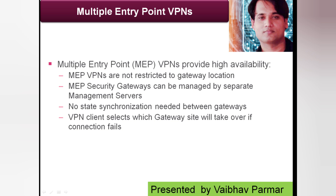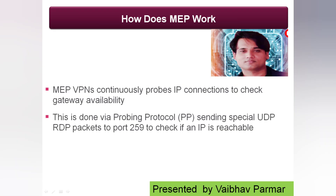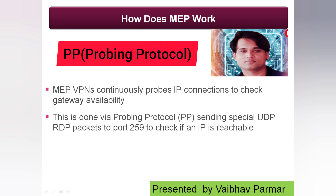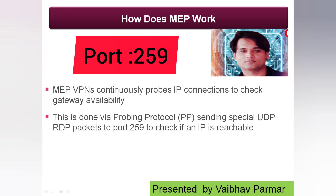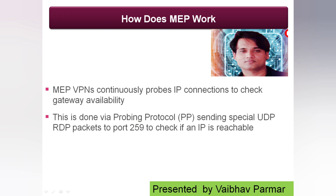Let's see how MEP Multi Entry Point VPNs work. MEP VPNs use the proprietary probing protocol — named the Probing Protocol (PP) — to send HCL UDP RDP packets to port 259, to discover whether a location IP is reachable. It is used by the peer to continuously probe all MEP security gateways. The probe indicates if a gateway is available or not, and each MEP gateway shares its status with the others and updates whenever conditions change.